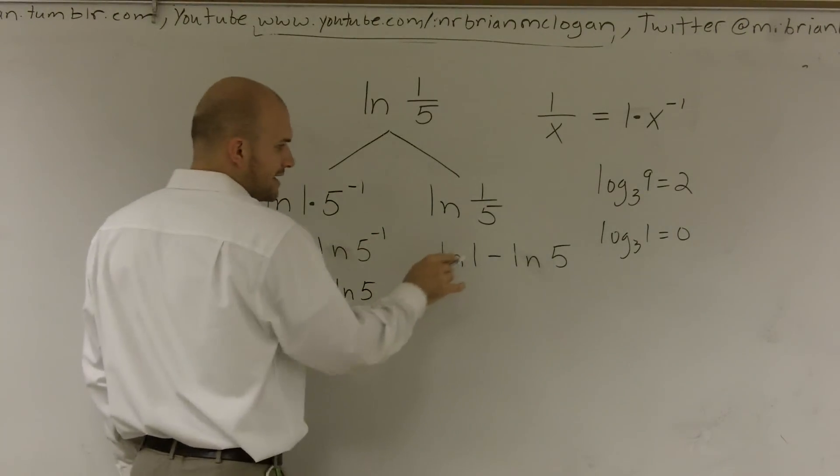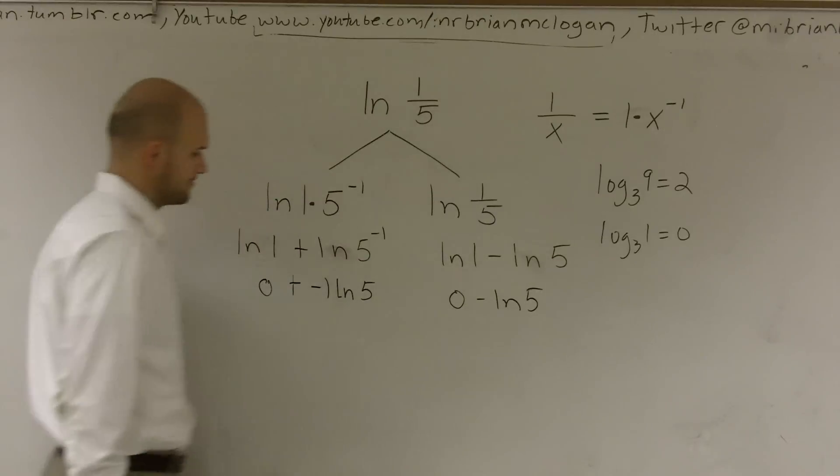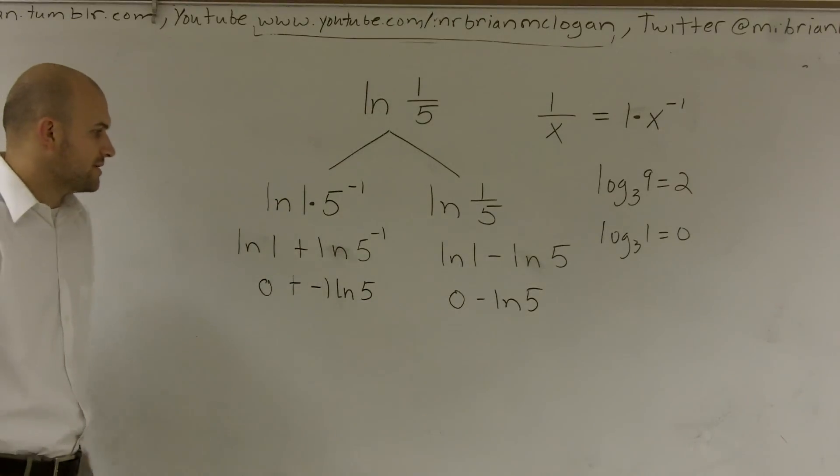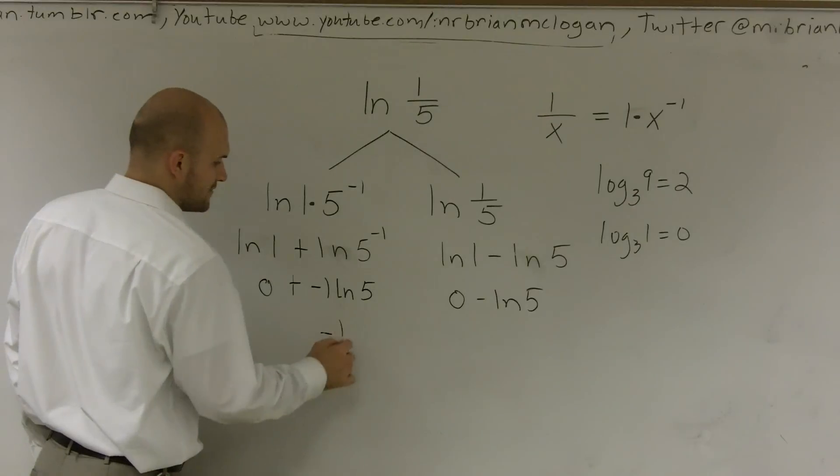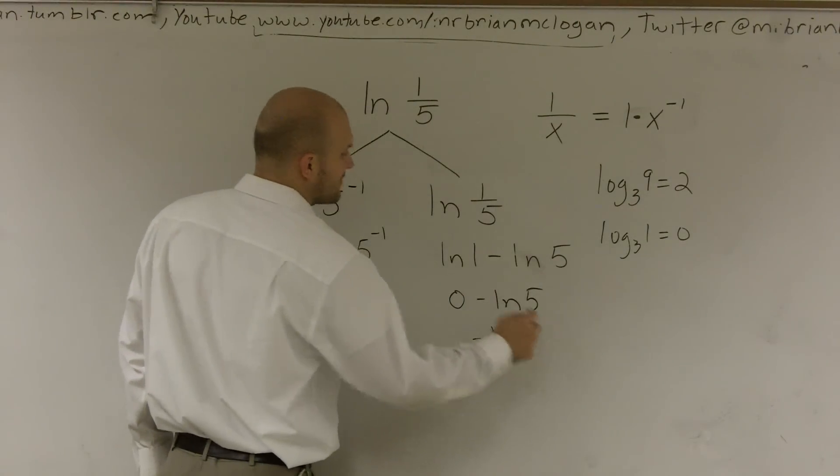Here, ln of 1 is 0 minus ln of 5. So here it's negative ln of 5.